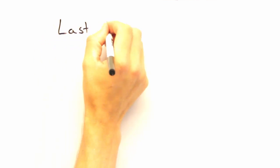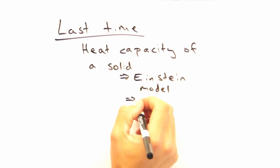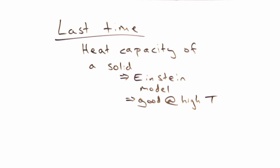Okay, so last time we wanted to determine the heat capacity of a solid. To do this, we started with the Einstein model. The resulting heat capacity worked really well for high temperature, but not so much for the low temperature limit.